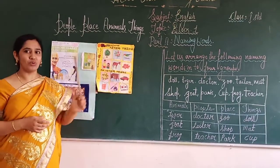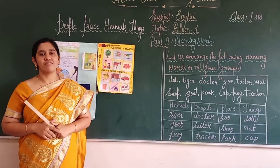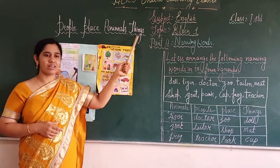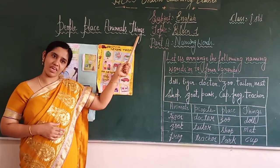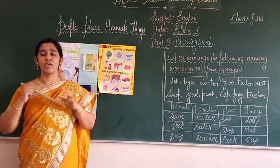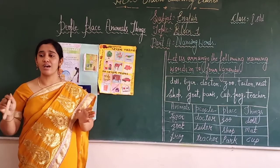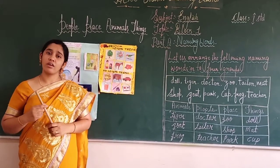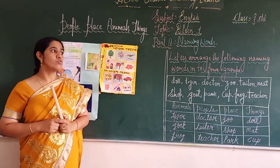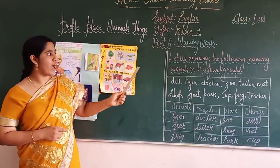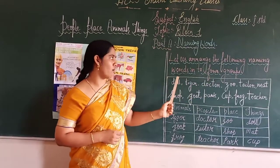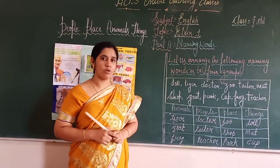Animals — you know animals. All the animals come under this group. And the last one is things. Things are the non-living objects around us; they come under this group. So let's arrange the following naming words into the four groups.